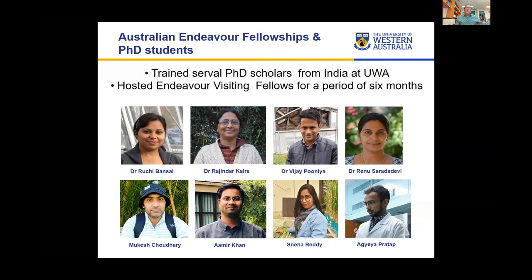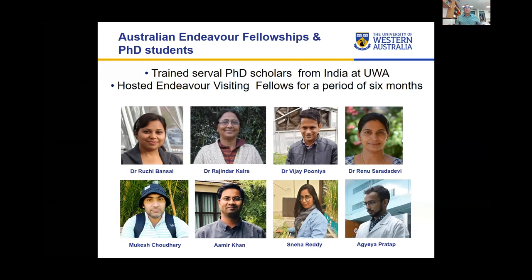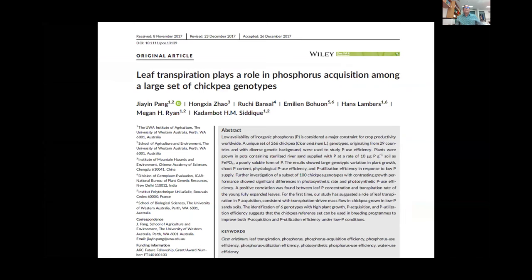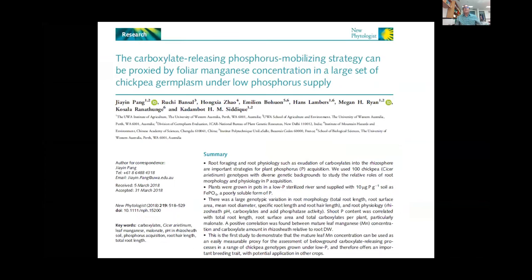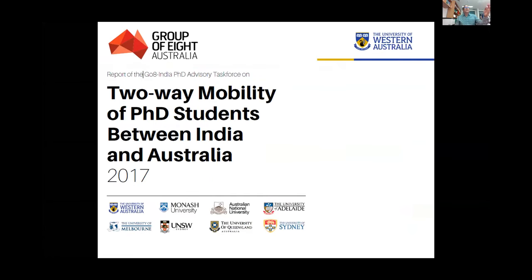We are in the process of signing a joint Australia-India Water Research Centre with five or six universities from Australia and five or six universities and institutions from India, including IITs. That will be signed on the 7th of November. That will be a big move because Prime Minister Modi, when he came to Australia, said water is a critical thing — as it is for Australia as well. Thank you.